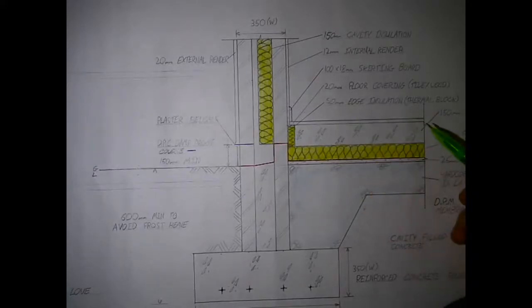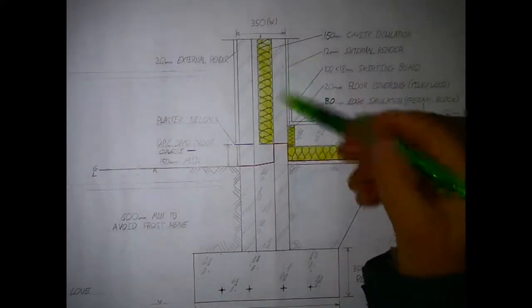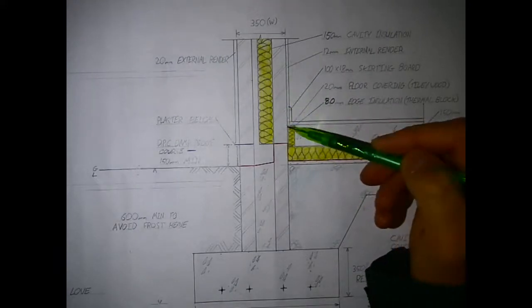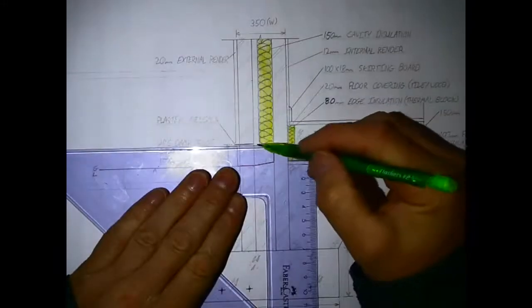The 50mm edge insulation shown up here will be changed to 80mm, and the cross hatch that you see here showing blocks, saving you having to draw in a whole load of them, should include cavity ties.